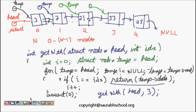Because temp next for this one is this, so temp comes here. And now i is equal to 3, which is equal to idx, so it returns temp data which is 33. So this is about getting the nth node from a linked list.